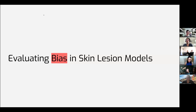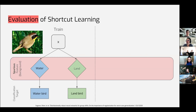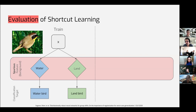I'll talk specifically about evaluating bias in skin image models. As Sandra said, I'll talk about trap sets, which has been with us since the beginning of our research in 2020. Before that, I'll give just a little context on the evaluation of shortcut learning. I know most people in this webinar are interested in shortcut learning - it's not a new concept for most people, but just to be complete.